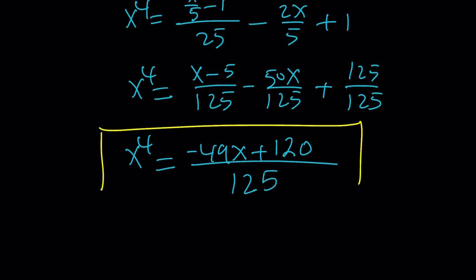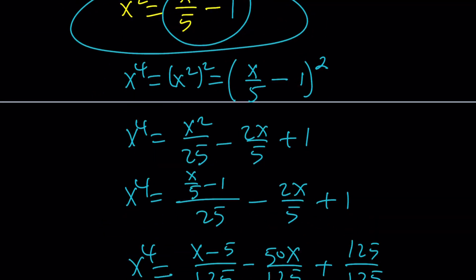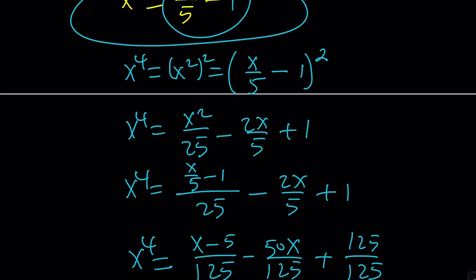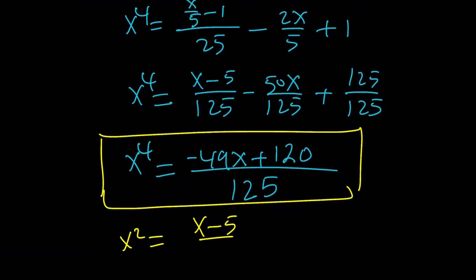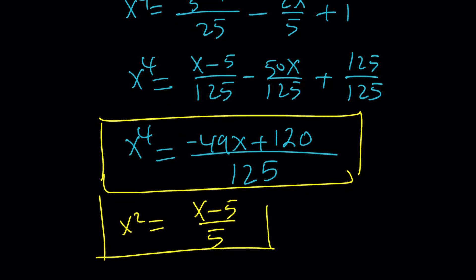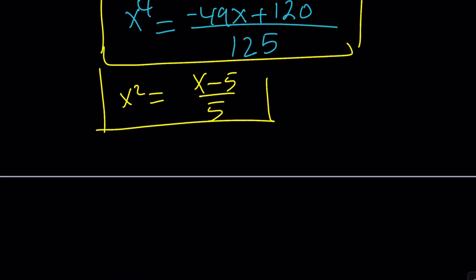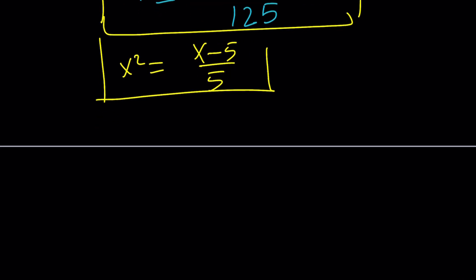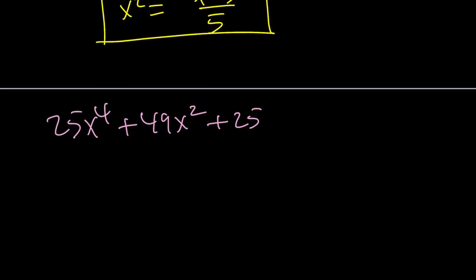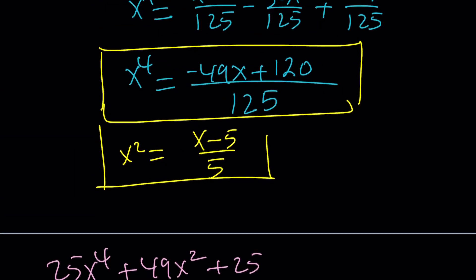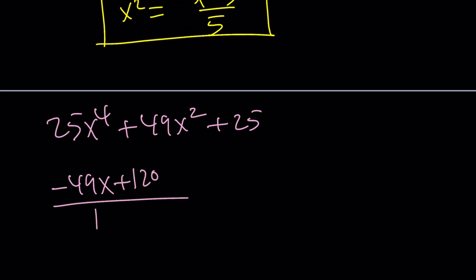So that will be equivalent to x to the fourth power. However, we already have something for x squared, which is x over 5 minus 1. But I could probably write it as x minus 5 over 5 so that I can work with fractions and make common denominators and so on and so forth. Okay. What am I trying to find from here? My goal is to evaluate 25x to the fourth plus 49x squared plus 25. And then if you go ahead and plug this in, multiply this by 25. Let's see. Negative 49x plus 120 divided by 125. Multiply by 25 plus 49 times x squared, which is x minus 5 over 5. And then plus 25.